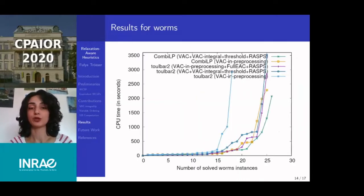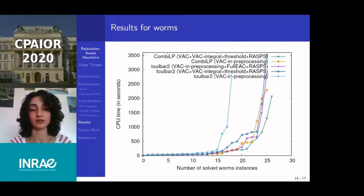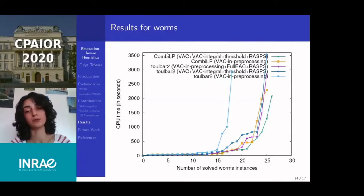A cactus plot for the Worms instances shows the x-axis as the number of instances solved by each method in under one hour, and the y-axis as the time taken. The yellow line corresponds to results reported by Hala et al., who solved 25 out of 30 instances. Using different combinations of our algorithms (dark blue and purple lines), we solved the same number of instances and performed nearly as well as CombiLP. Incorporating our heuristics into Toolbar 2 inside CombiLP, we managed to solve 26 instances — one more than the previous state-of-the-art.